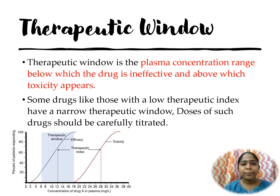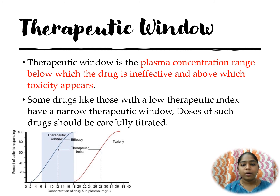Therapeutic window is the plasma concentration range below which the drug is ineffective and above which it produces toxicity. Hence, it is desirable to maintain plasma concentration of drugs within the therapeutic range. Some drugs with a low therapeutic index have a narrow therapeutic window — for example, clonidine at 0.2 to 2 nanograms per milliliter. Doses of such drugs should be carefully titrated and given.